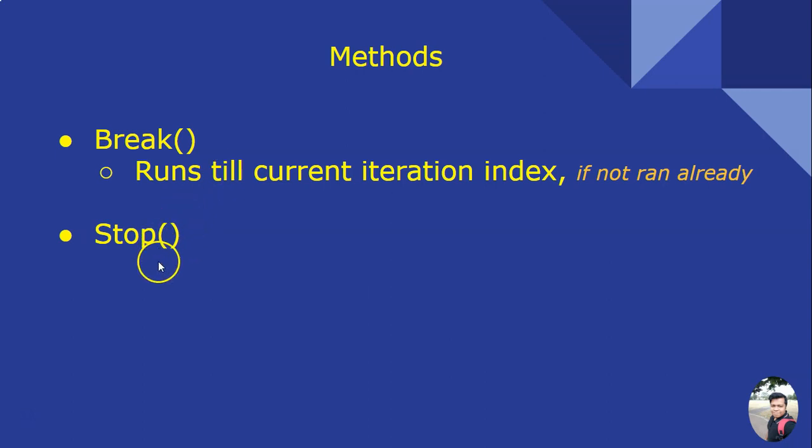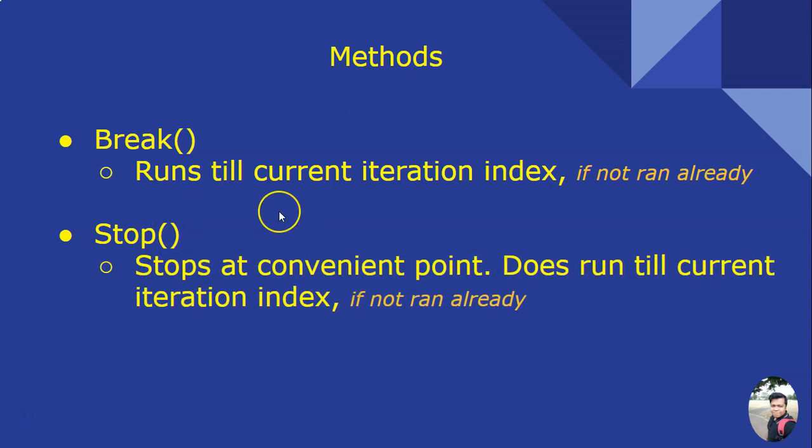Stop, on the other hand, stops the loop at a convenient point. It does not wait for the current iteration index. If lower iterations have not run, it will not wait for them to complete.